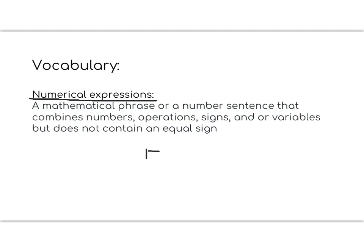That would look something like five times two plus seven. That is an example of a numerical sentence. It has numbers, it has operation signs, but it doesn't have an equal sign. Please pause to write the lesson vocabulary and definition in your notebook.